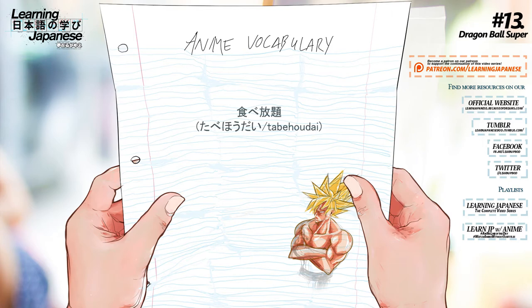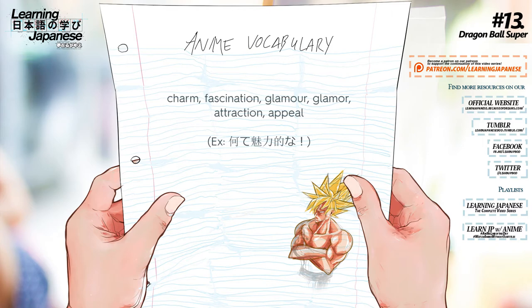食べ放題 — All you can eat, smorgasbord. 魅力 — Charm, fascination, glamour, attraction, appeal.